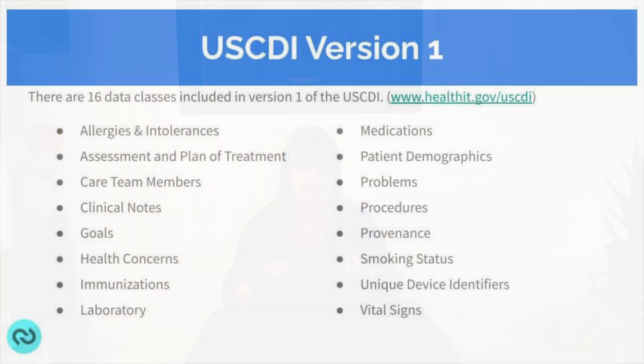Within version one — which is the version referenced in all of the recent legislative requirements that have come out in the US — we have 16 different data classes covering all sorts of things from allergies to procedures to provenance, immunizations, and labs. They don't cover everything, but it is a good start. Version two was just released in July of 2021, and it incorporates some additional data classes as well as additional data elements within classes that already existed.